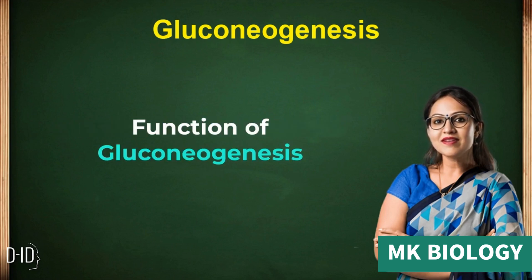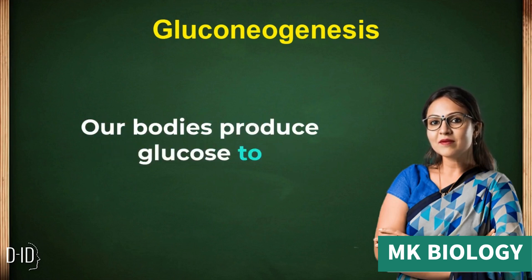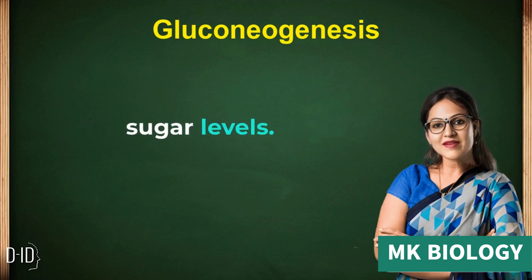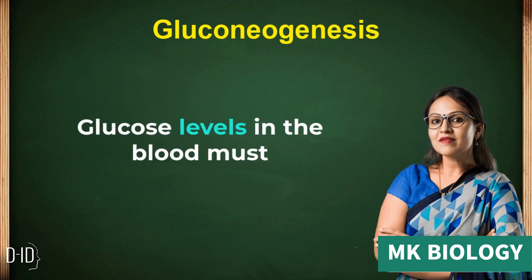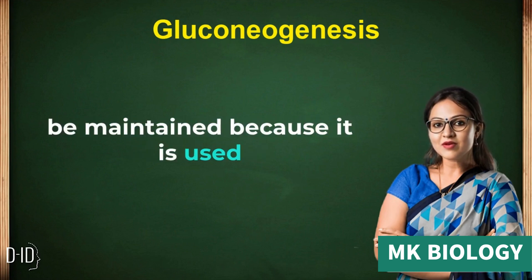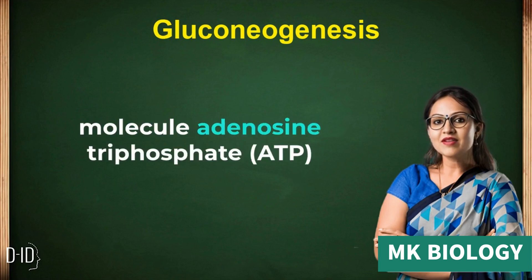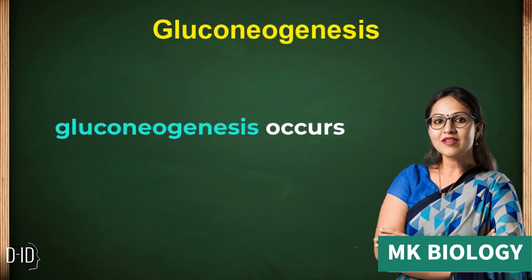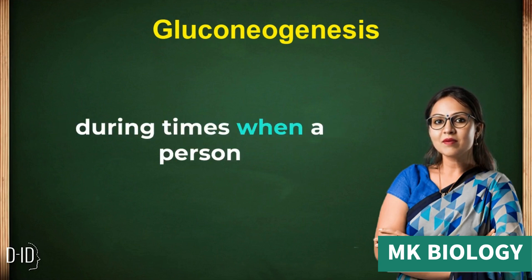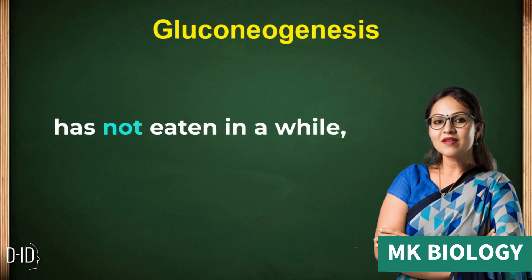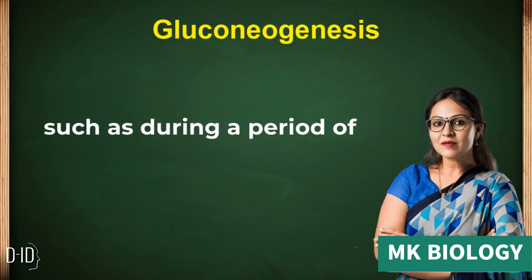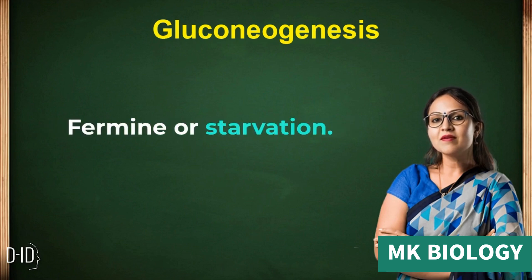Function of Gluconeogenesis: Our bodies produce glucose to maintain healthy blood sugar levels. Glucose levels in the blood must be maintained because it is used by cells to make the energy molecule adenosine triphosphate, ATP. Gluconeogenesis occurs during times when a person has not eaten in a while, such as during a period of famine or starvation.